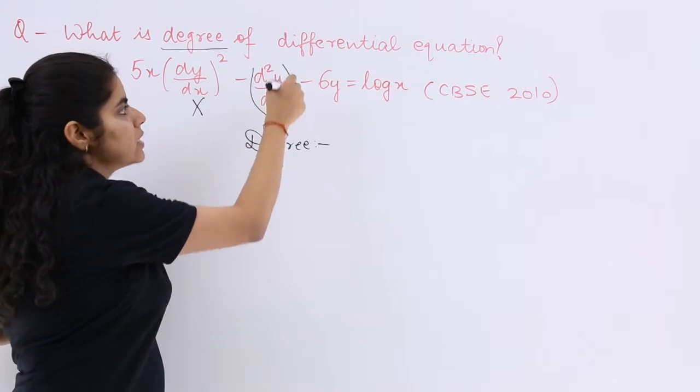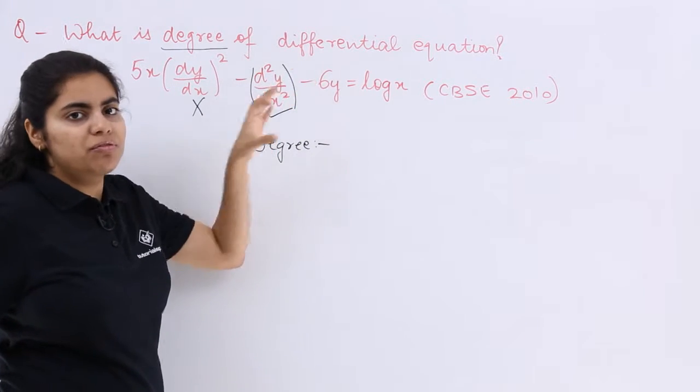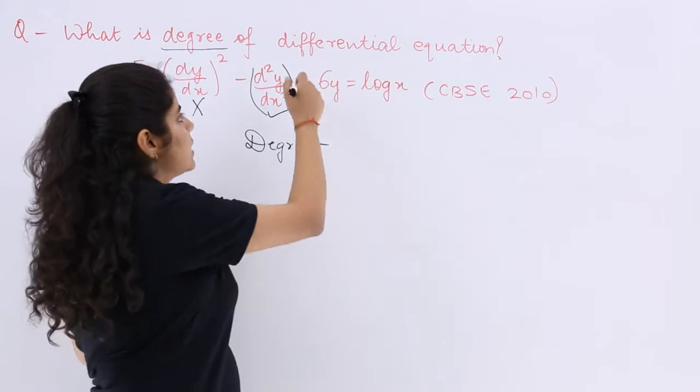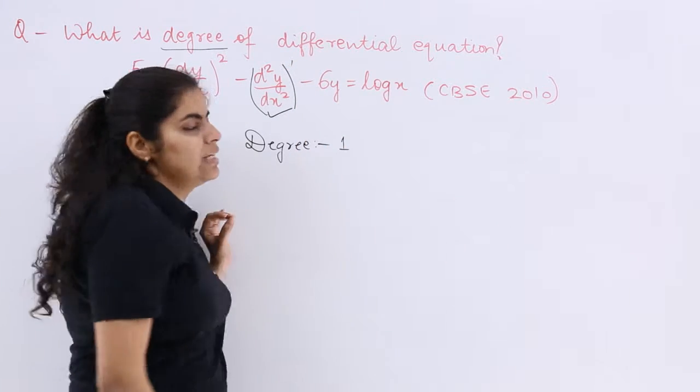Is there any power that has been raised to this, power 2, 3, 4, 5? No. So since there is no power, I can raise it as one, and hence the degree is one.